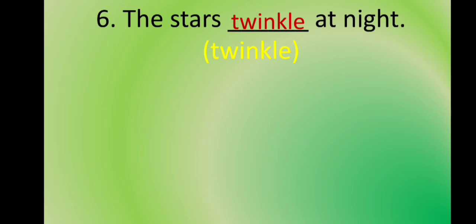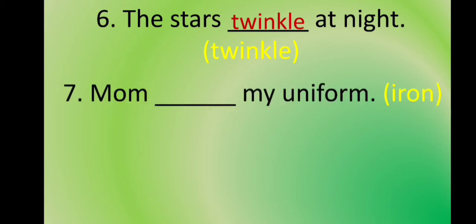The next statement is: Mom ___ my uniform. The verb is 'iron.' The subject is 'mom,' which is a singular subject, so we use the verb's S form. The answer is: Mom irons my uniform.